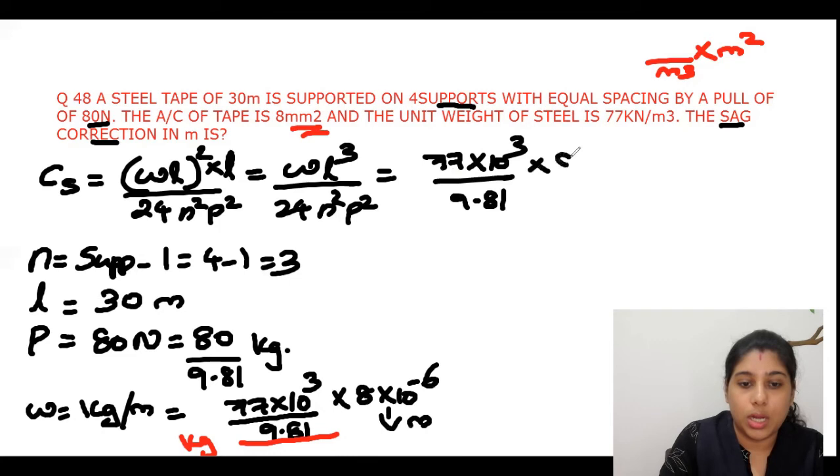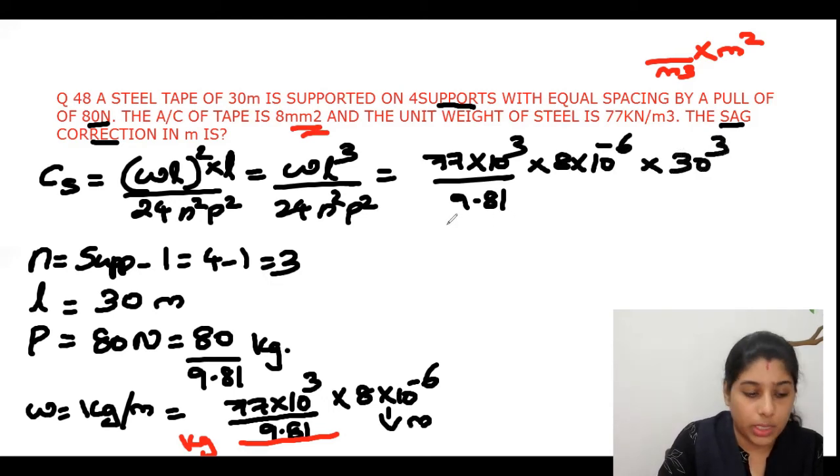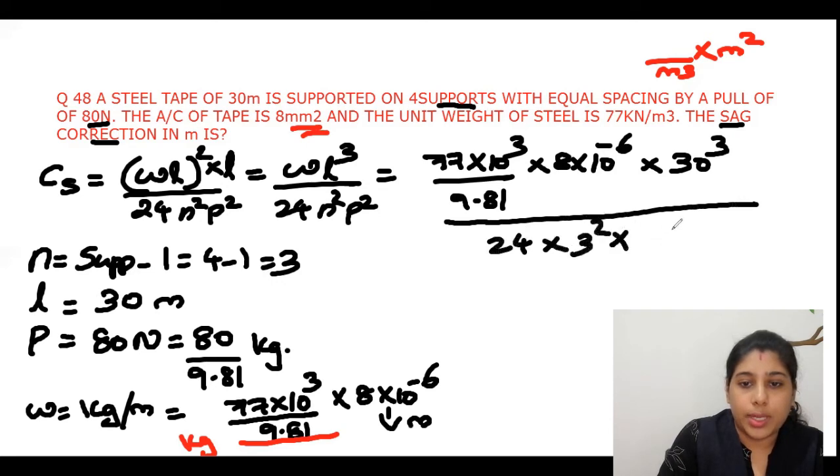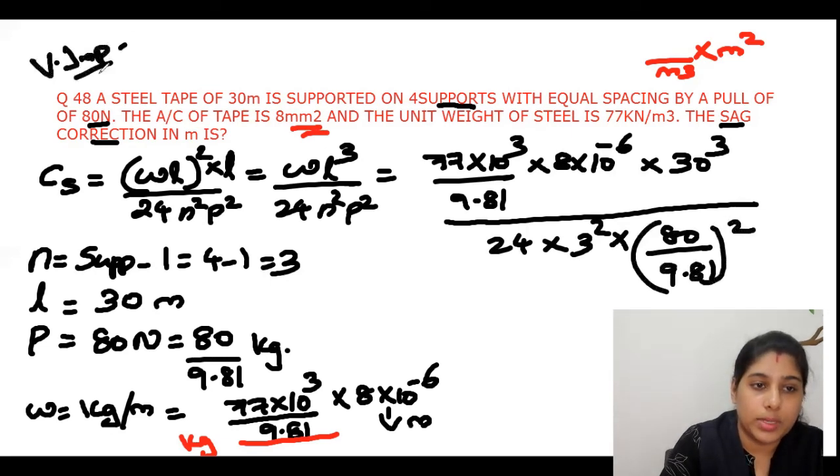Now we can substitute the value. So 77 × 10³ / 9.81 × 8 × 10⁻⁶, so this is the w value. Into what is L? L is 30³. We don't want to do anything further for L because L should be in meter only. Divided by 24 × 3² × (80/9.81)². So this is very important question in GATE examination as well as IES examination. Please understand this, re-watch the video and do this problem.